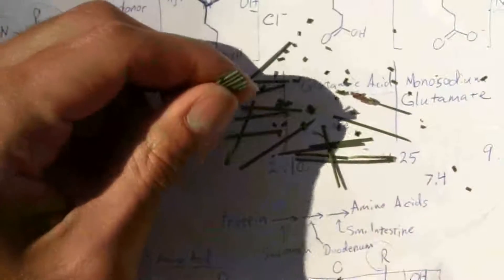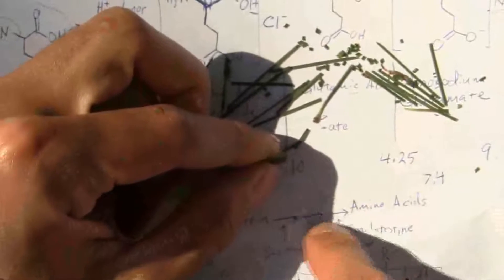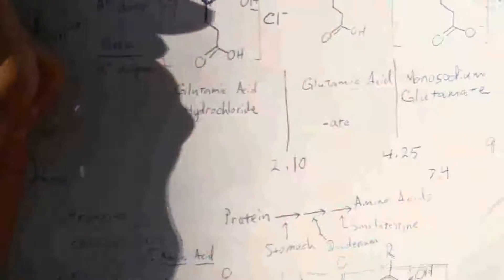That's what happens not in the stomach, but further down the line in the duodenum or in the small intestine. That's where it breaks it down into the individual amino acids.